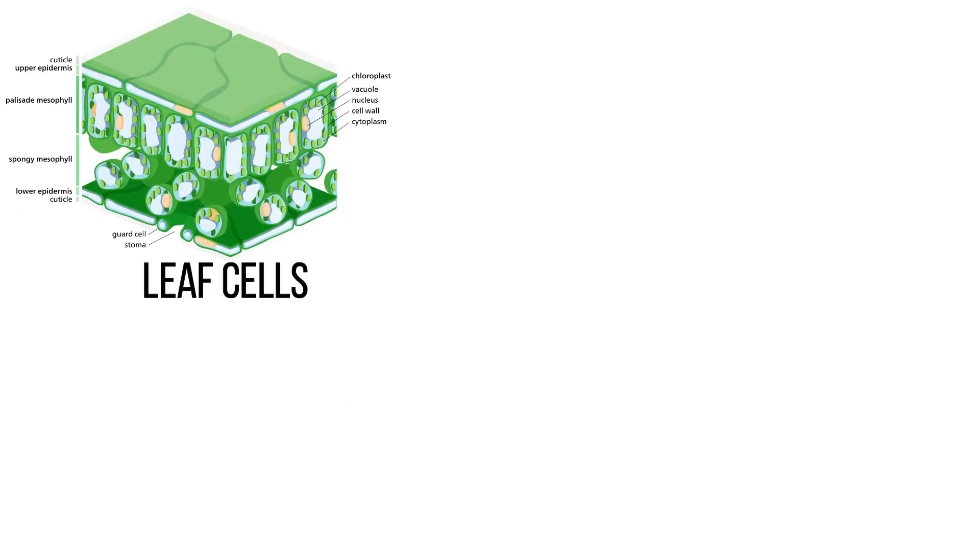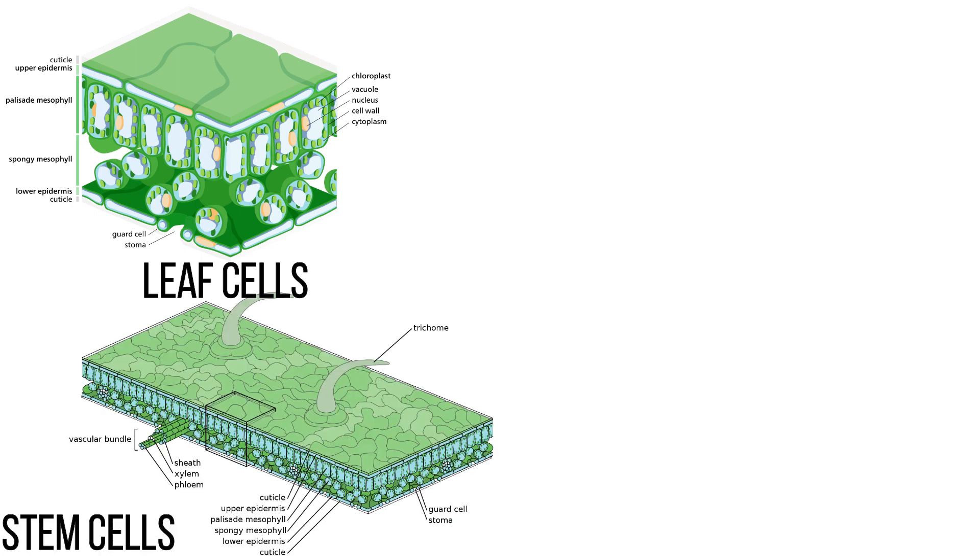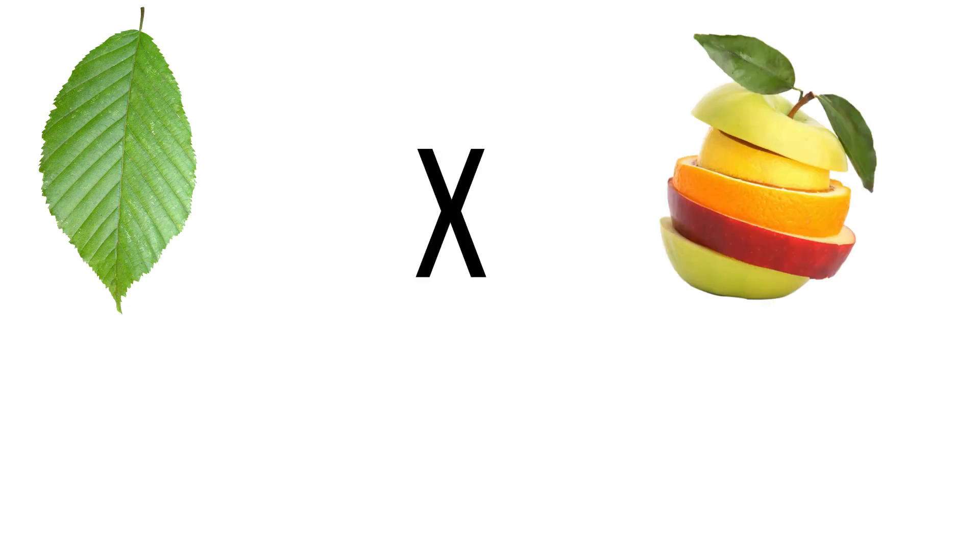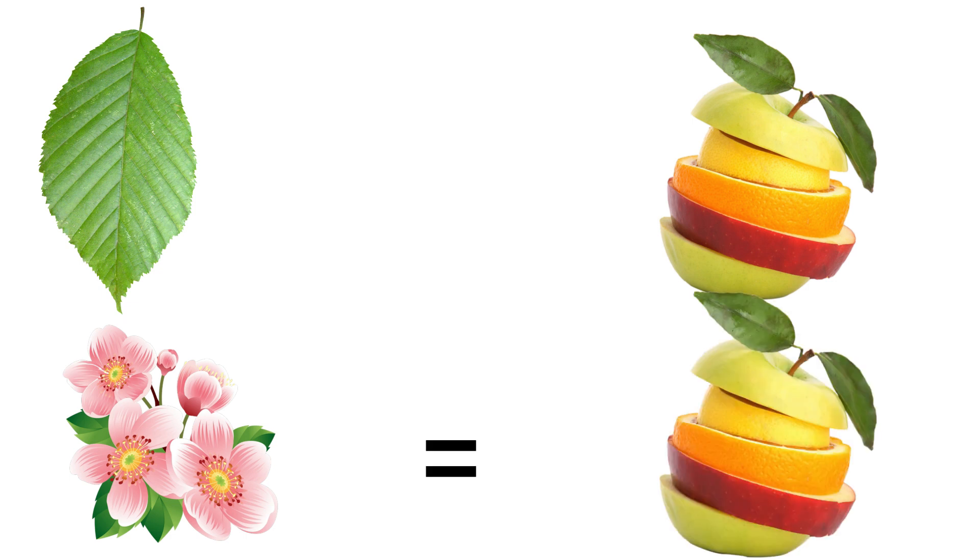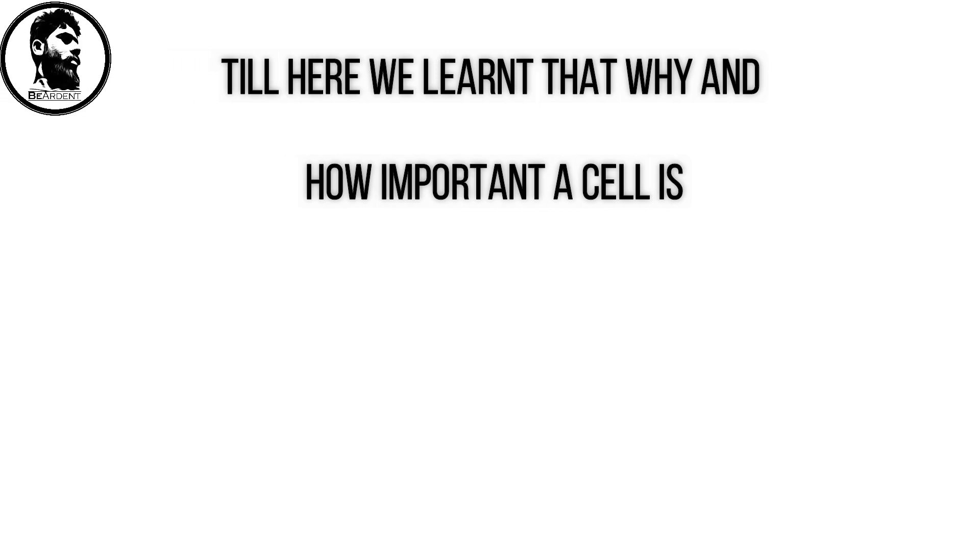In plants leaf cells are having different structure than the cells of stem and roots. And when we talk about function also leaf cells can't become a fruit while flower can become a fruit because it is its function. Till here we have learned that why and how important a cell is.